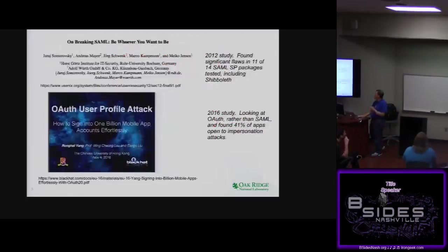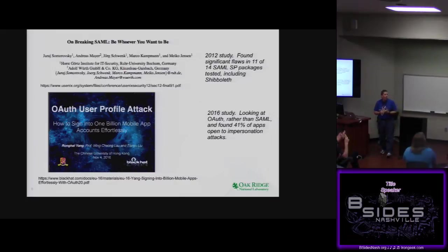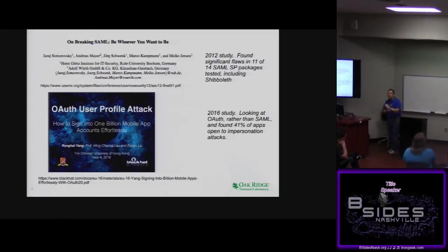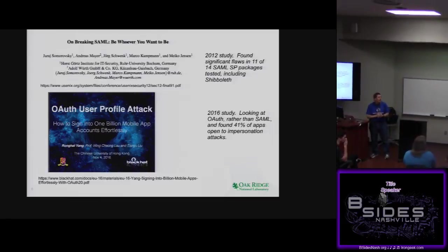What motivated this work? There was a paper published in 2012 that found a significant number of flaws in 14 different SAML service provider packages, including Shibboleth. That should scare people because Shibboleth is by far and away the most widely used SAML service provider — basically every single university in the country. It is the primary open source provider. Shibboleth has fixed those problems, but that still gets one concerned. OAuth is related — a similar process often used in mobile applications. A Black Hat paper from 2016 found that 41% of applications did not implement OAuth correctly and were susceptible to impersonation attacks.